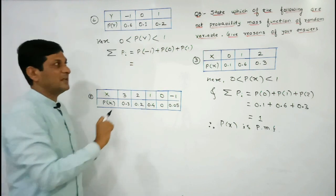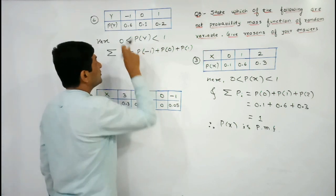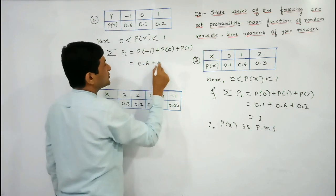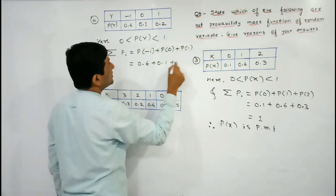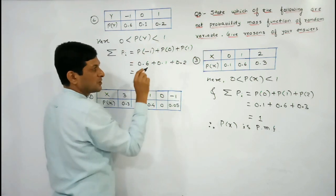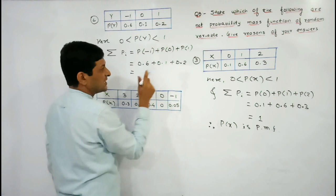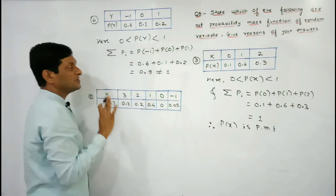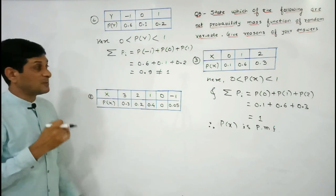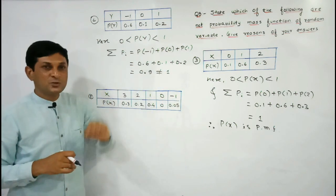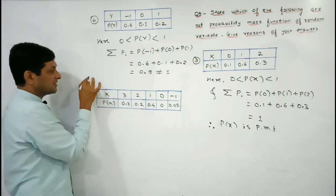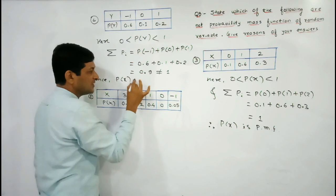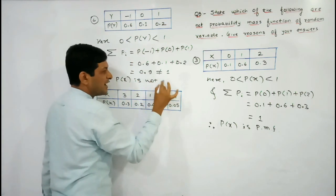When x equals minus 1, probability is 0.6; when x equals 0, probability is 0.1; when x equals 1, probability is 0.2. Adding all probabilities: 0.6 plus 0.1 plus 0.2 equals 0.9, which is not equal to 1. Since the second condition is not satisfied, the sum of all probabilities is 0.9, hence P(x) is not a probability mass function.